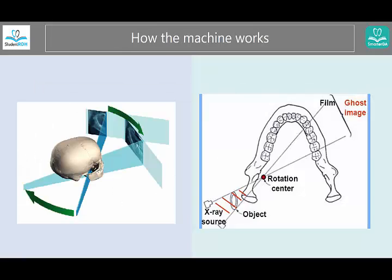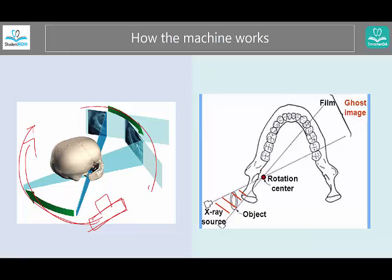Let's look at how the machine works first. This is the tube head — you can think of this as the camera or the projector. It is going to rotate behind the back of the patient, and the image receptor or film is going to rotate in the front. This is how the images are taken.